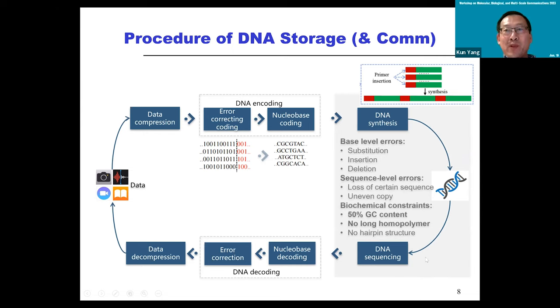During this process—transmission or synthesis or sequencing—a lot of errors could occur, including base level like substitution, A turned into G, insertion or deletion of bases, and the sequence level. A lot of things may happen as well, for example a loss of a certain sequence, even copy, because we do a lot of copies, PCR mainly here. And there are also biochemical constraints we need to consider as well. I will come back to this a little bit later on.